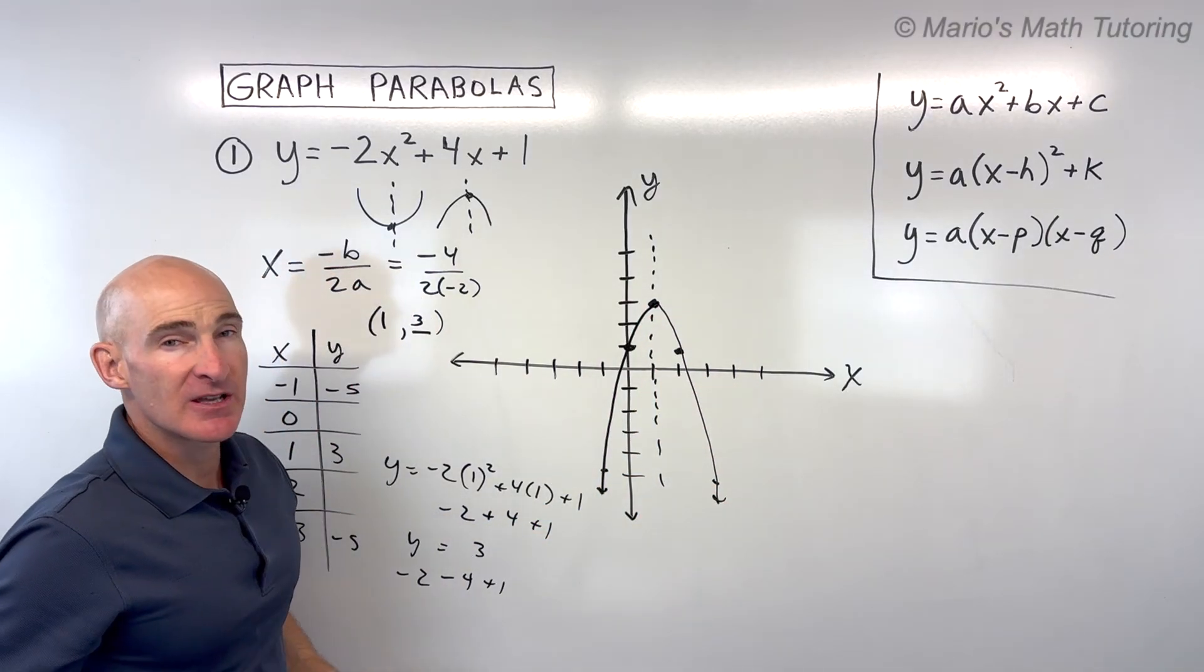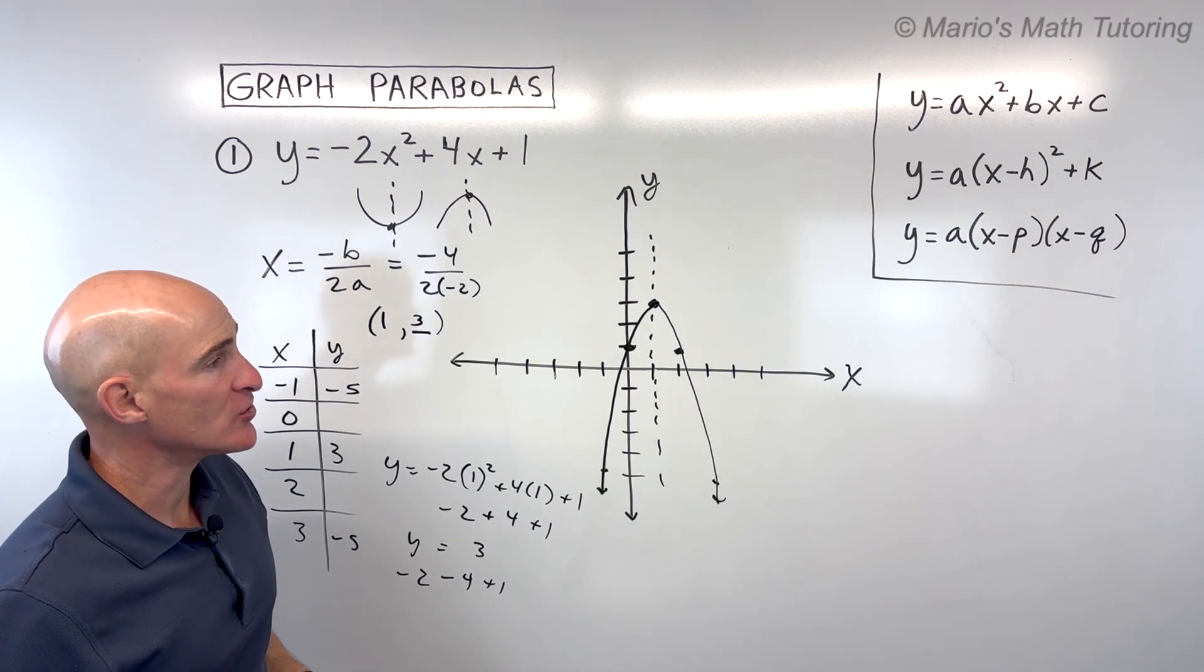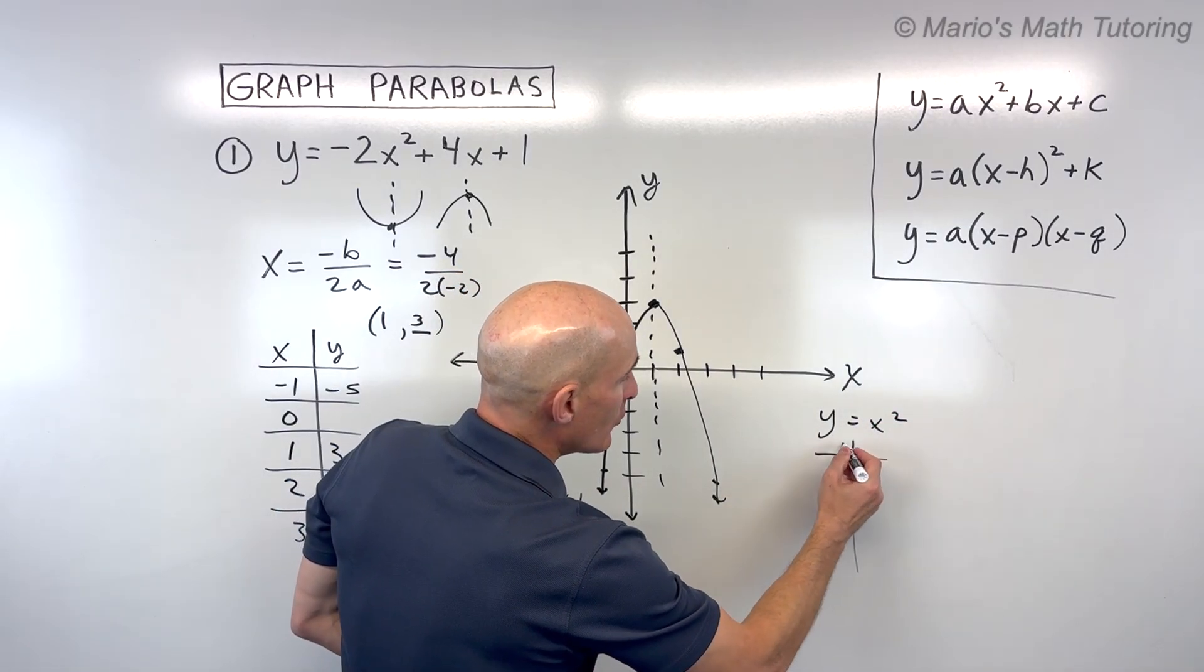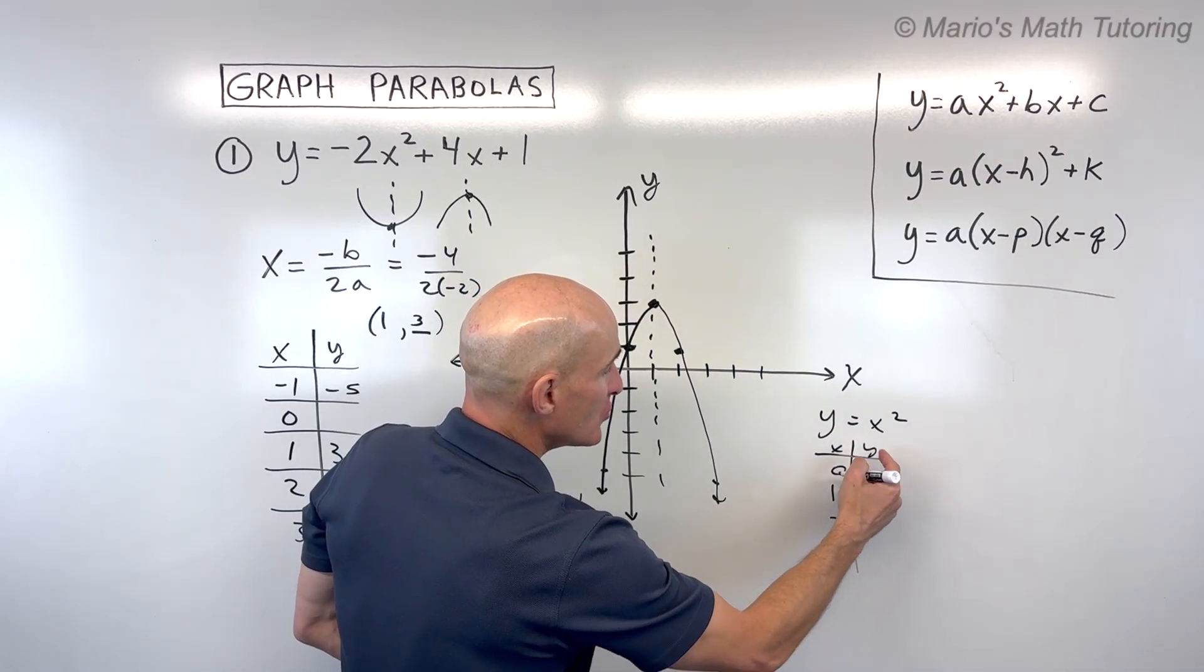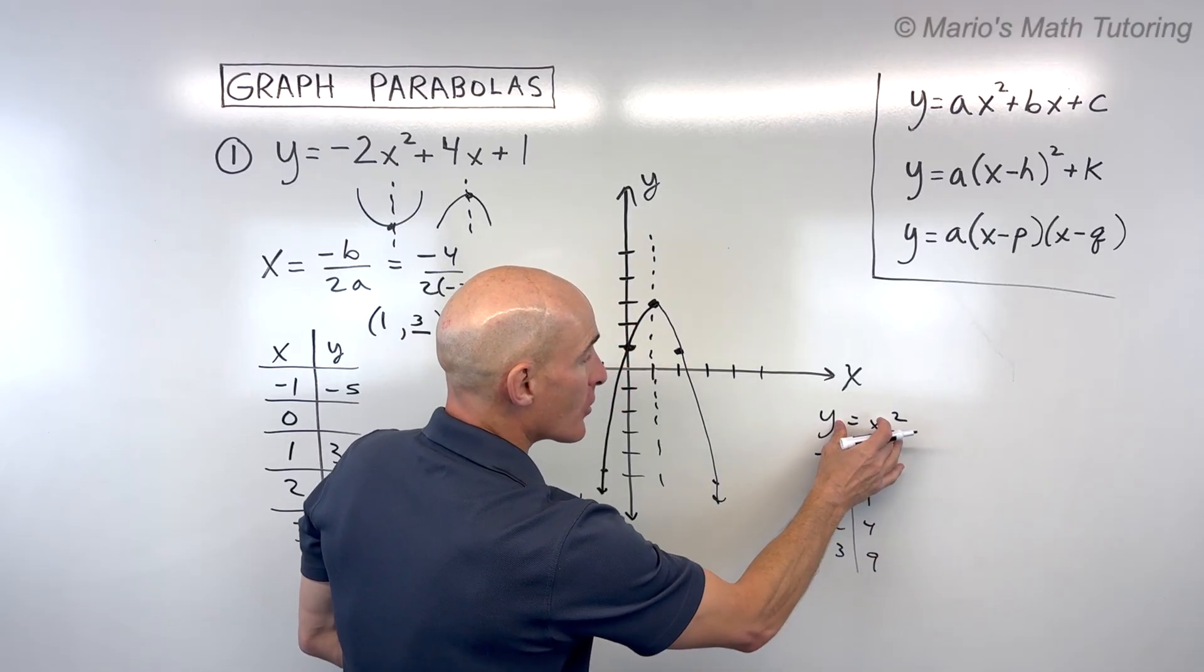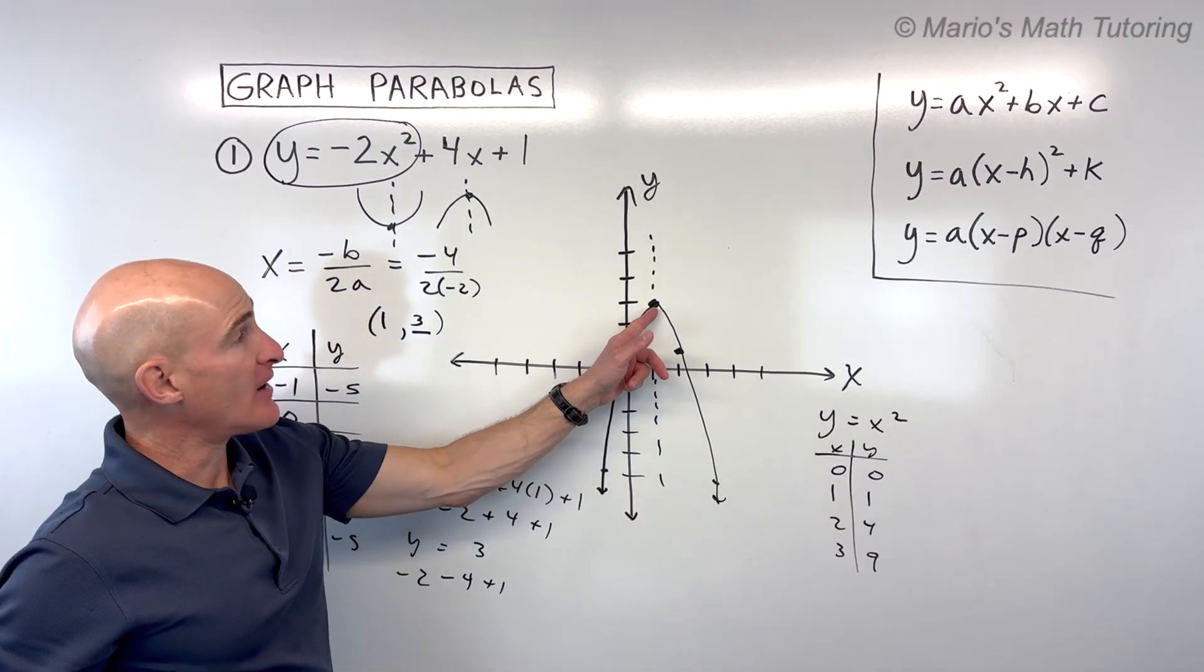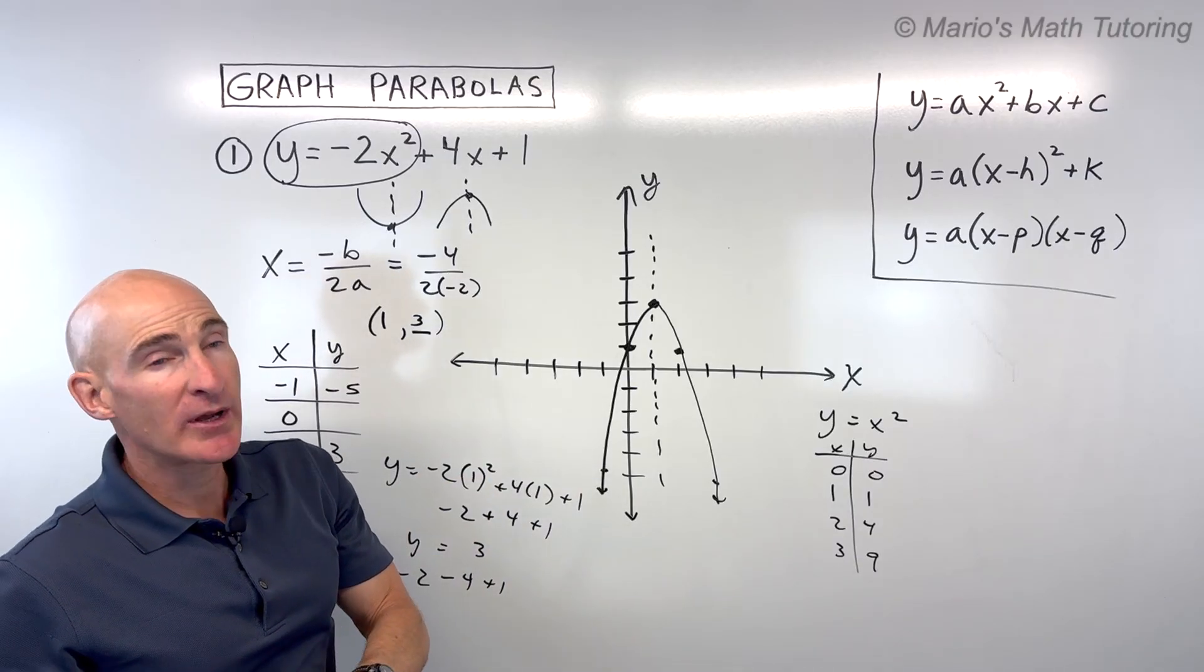Now there's a shortcut method that some students like to do, and I want to show you that method in case you're a more advanced student. What you can do is focus in on the parent function, y equals x squared. If you make a table, when you put 0 in, you get 0. When you put 1 in, 1 squared is 1. When you put 2 in, 2 squared is 4. If you put 3 in, 3 squared is 9. That's our parent function. But if you focus in on just this part, the y equals ax squared, after you find the vertex using this negative b over 2a, this will give you an idea of how to find the other points quickly.